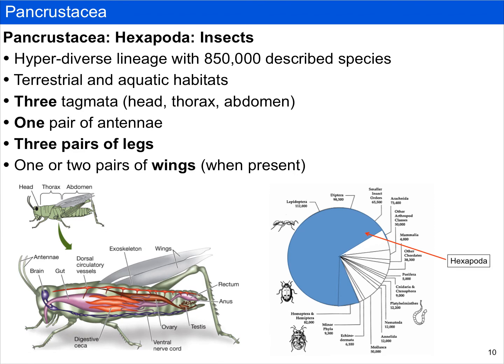Hexapods are the most diverse lineage within pancrustacea — they're typically referred to as hyperdiverse. There are at least 850,000 described species, and as such they sort of do everything. They can be terrestrial or aquatic, including freshwater and marine. They can be parasites, scavengers, predators, and even some other kinds of ecologies like parasitoids, which we're going to talk about briefly in our next video.